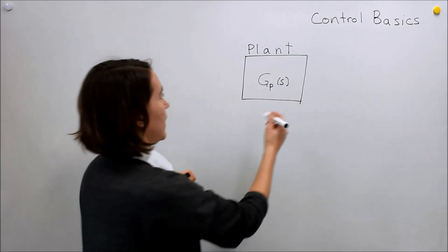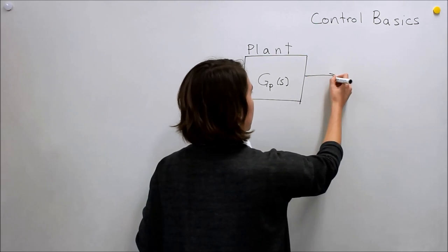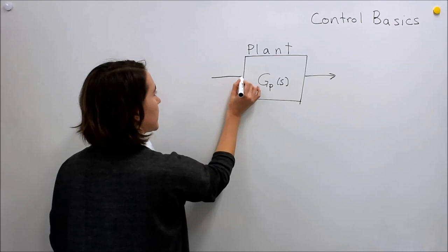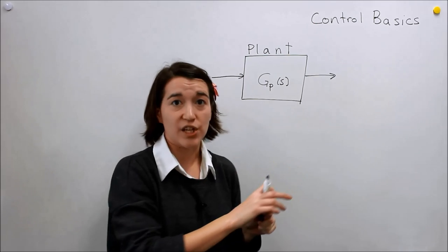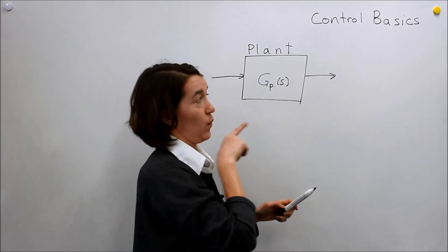So we've looked at this system a lot and we usually have some sort of input going into our system and I'm going to specify this one. Usually we're looking at linear systems so there's one input and one output.